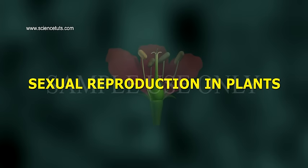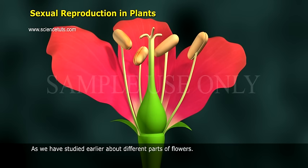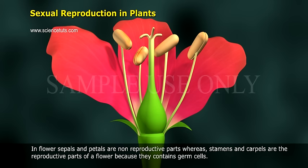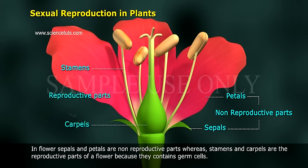Sexual Reproduction in Plants. As we have studied earlier about different parts of flowers, in a flower, sepals and petals are non-reproductive parts, whereas stamens and carpels are the reproductive parts of a flower because they contain germ cells.